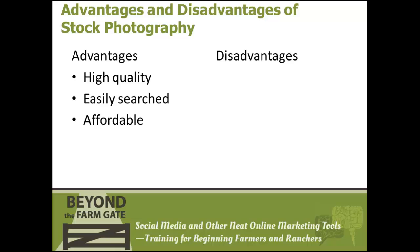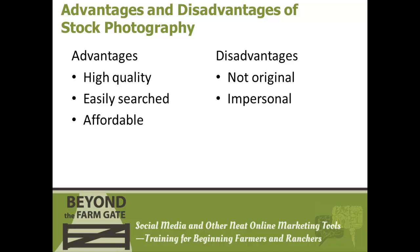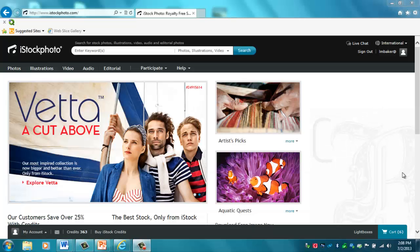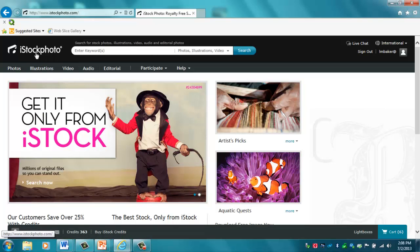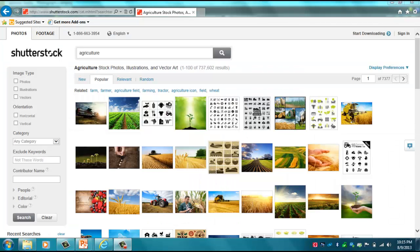However, there are some disadvantages to stock photography websites. They are not original work. When you search for an image, they are shown to you by popularity — displayed by how many times they have been purchased, downloaded, and used on the web or other print media. Another downside is that stock photography can seem impersonal. Stock can't offer the personalization of photographs taken at your own farm, ranch, or business. A couple of stock photo sites are iStockPhotos.com and Shutterstock.com.